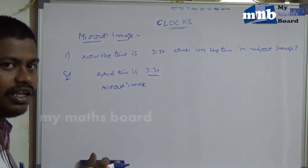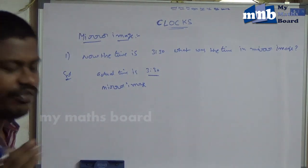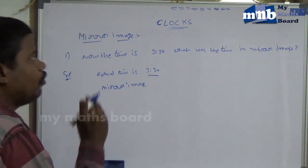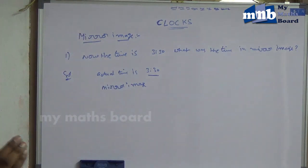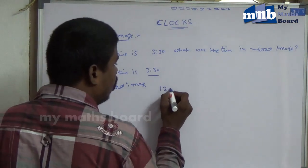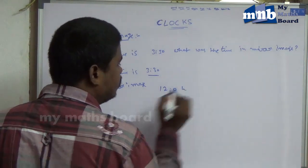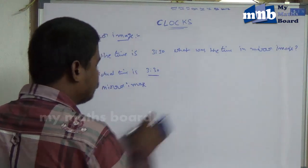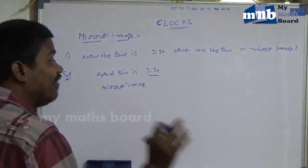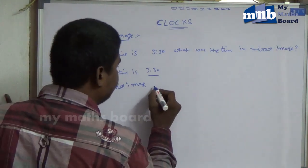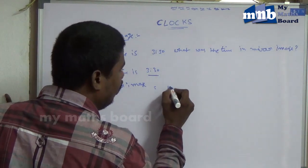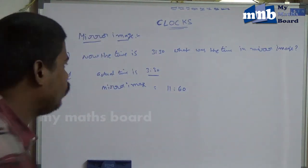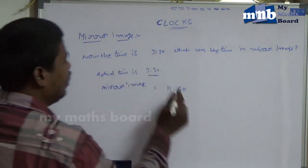From 12 hours, you get the mirror image. But according to our class theory, 12 hours is not written as 12 hours — that is not correct. Because 12 hours means 11 hours 60 minutes. 11 hours 60 minutes is equal to 12 hours. So you subtract from the actual time.